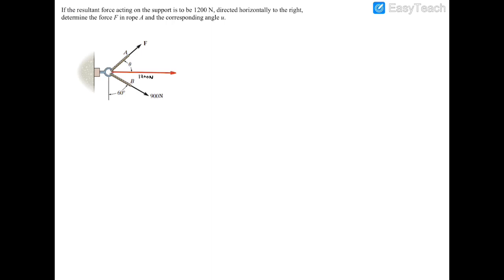So just by the setup of this problem, it's already looking like we're going to use the law of parallelograms, so why don't we go ahead and set up our parallelogram. So we'll start with that rope A, which is pointing upwards with some force F, and then we're going to have rope B with 900 newtons going somewhere in this direction. We're going to have our resultant force, I'll put that in red, going horizontally to the right.